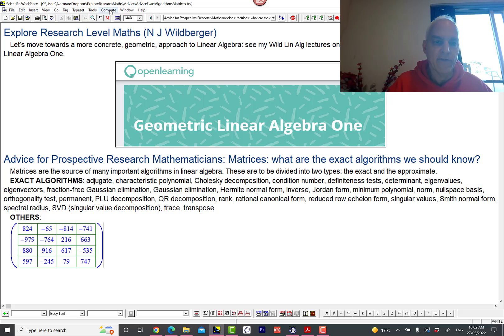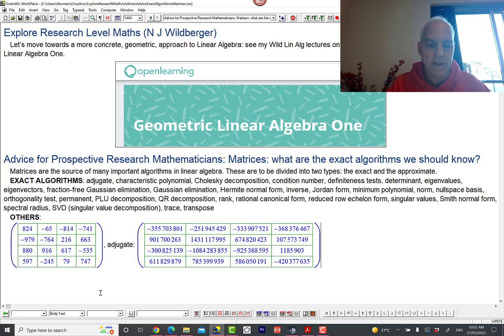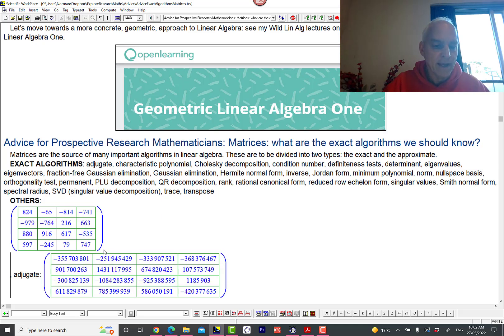There's a matrix and we're going to apply these various algorithms to this matrix and see what we get. The first one is the adjugate. The adjugate of a 4x4 is another 4x4 matrix which you can think of as being more or less an inverse. It's more or less like the inverse except that you're not dividing by the determinant.